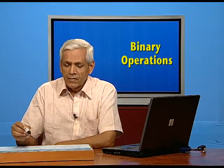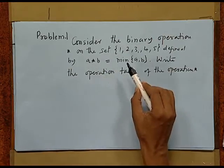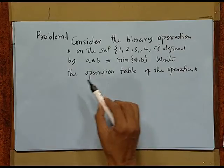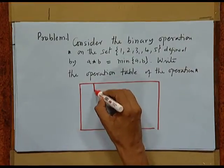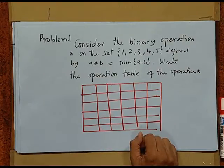Now let us take a problem. We are given a set {1, 2, 3, 4, 5} and a binary operation defined as A operation B is the minimum of A and B. We are required to write the operation table. By an operation table we mean writing all the outputs of all possible combinations in a tabular form. Here we have 5 elements, so we make a 6 by 6 array. We first write the elements at the top: 1, 2, 3, 4, 5, and again 1, 2, 3, 4, 5 on the side.